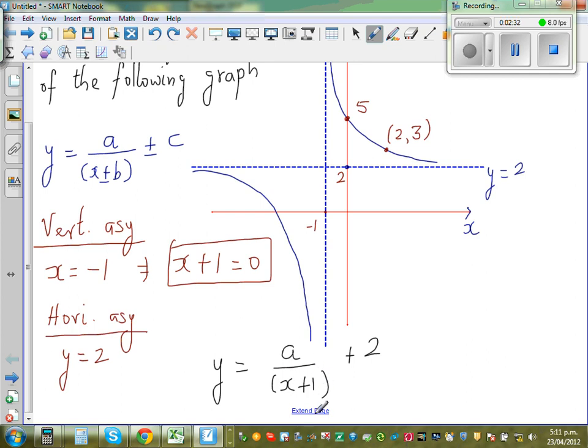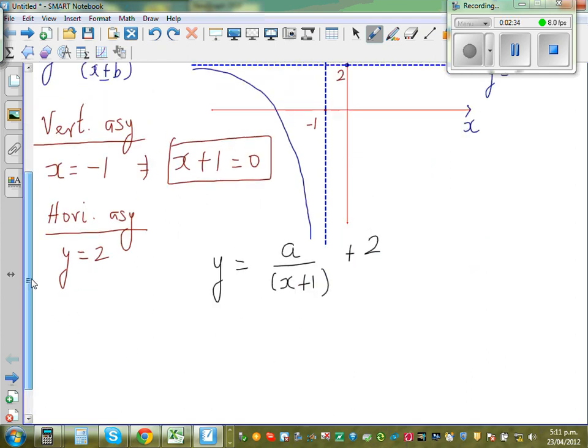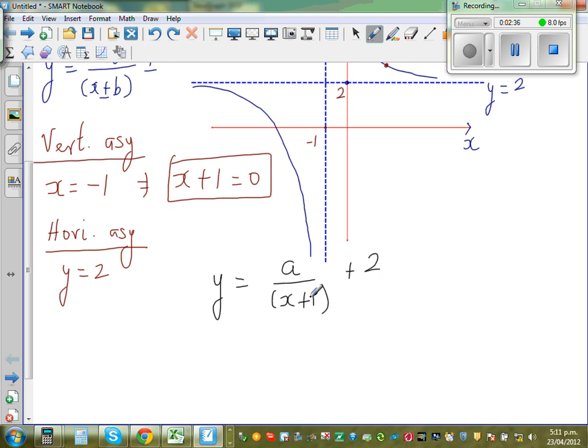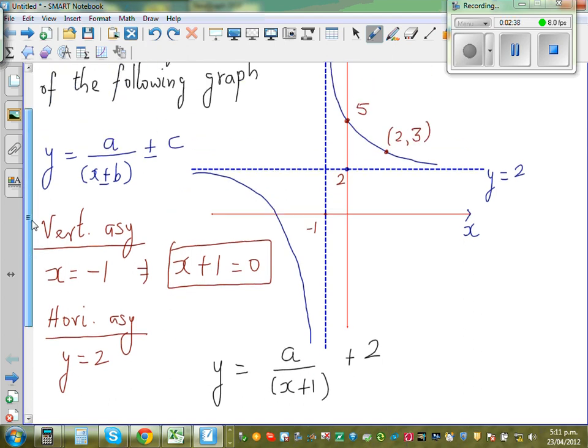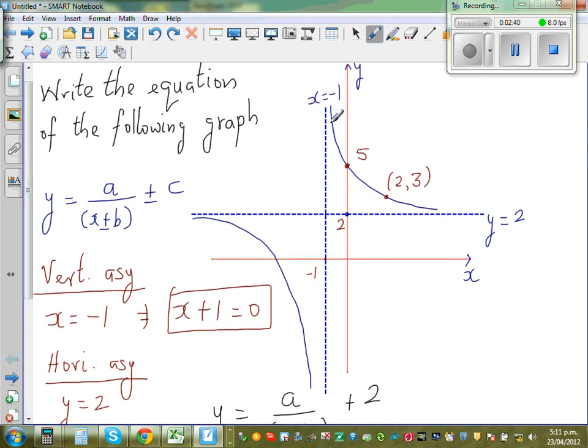In other words, if you want to understand logically, or the math behind it is, when x becomes negative 1, your function is not defined. And that is what the vertical asymptote is telling you, where your function is not defined.